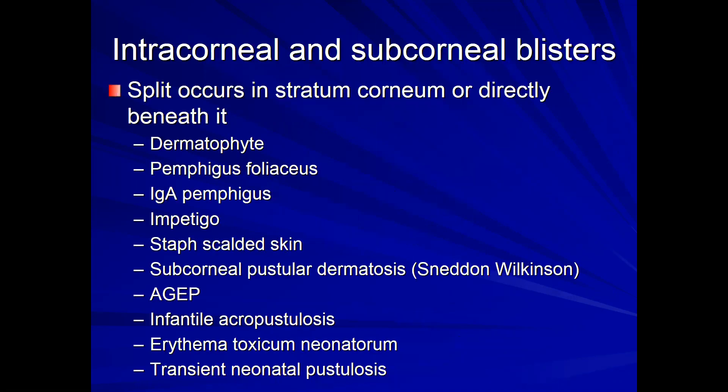To start with the vesiculobullous section, we're going to begin at the top of the epidermis and move our way downward. We'll begin in the cornified layer, either with an intracorneal split or a subcorneal split — a clean split or a pustule. That includes entities such as infections like dermatophytes or impetigo, autoimmune blistering conditions such as pemphigus foliaceus or IgA pemphigus, and toxin-mediated splits like staph scalded skin.